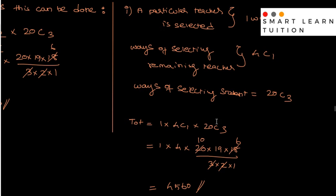So 20 into 19 into 18 divided by 3 into 2 into 1. Simplify, and you will get the answer 4560.